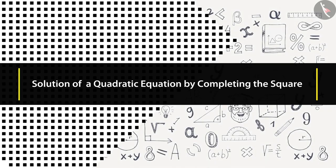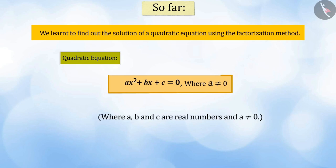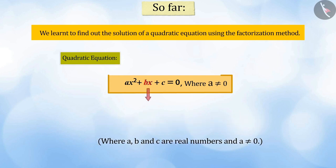Hello everyone, welcome to this video. In our previous video, we learnt to find out the solution of a quadratic equation using the factorization method, in which the middle term is in the form of bx, coefficient b of x is equal to the sum of two factors and the product of a and c.